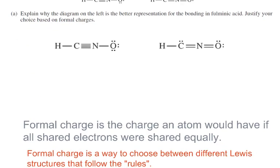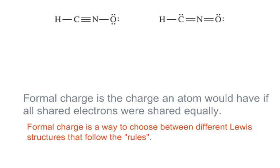Well, if we go through here, formal charge is a way to go back and figure out which, if we have a couple of structures that follow the rules for doing Lewis structures, how do we tell which one is the better structure? Formal charge is the charge an atom would have if all the shared electrons were shared equally.